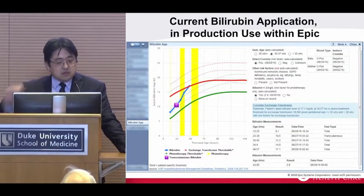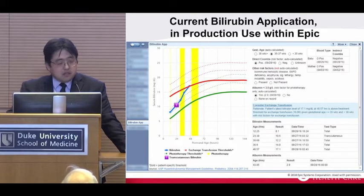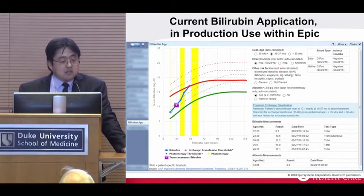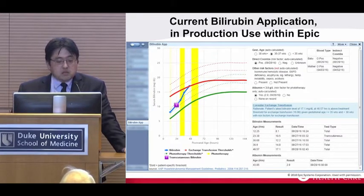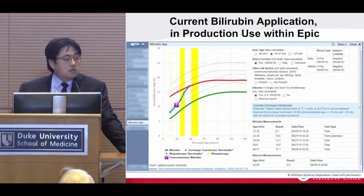This is a screenshot from our current Bilirubin application, which is in production use with Epic. It's the Bilirubin app tab accessible to pediatricians in our system. The Y axis is the Bilirubin levels and the X axis is hours since birth. The blue line shows the Bilirubin levels. For Bilirubins, you can use both a transcutaneous measurement and a serum or blood measurement. We integrate both, but because transcutaneous labs have different performance characteristics, we visually label them with a T.